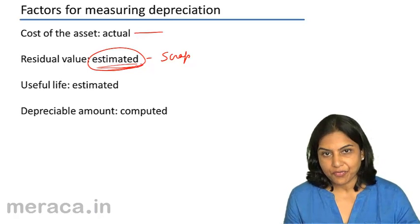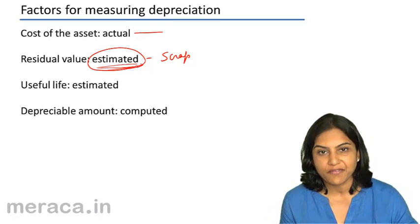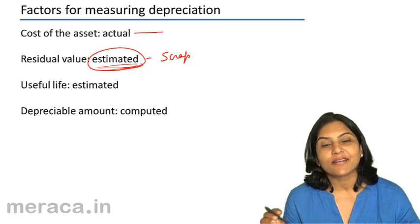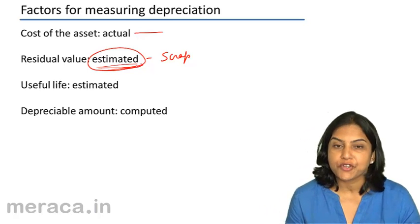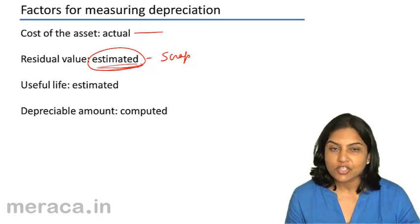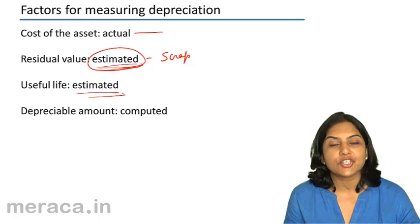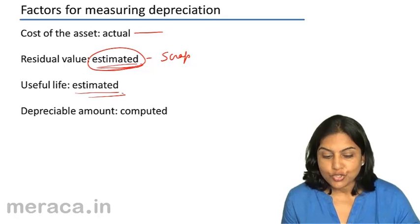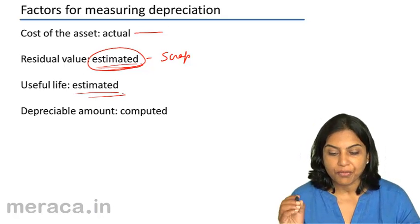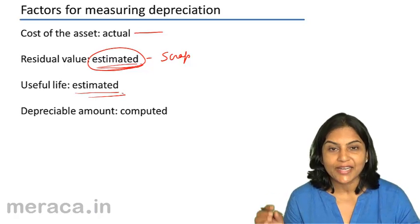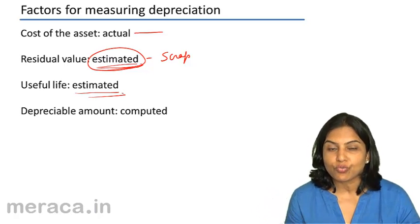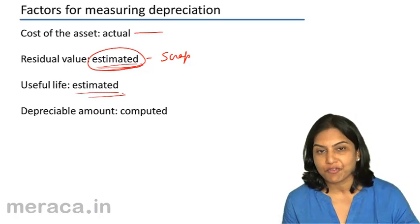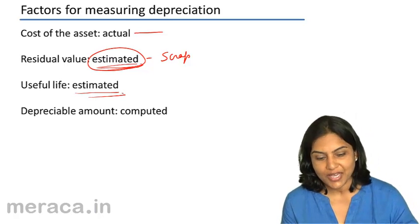Next is the useful life. I expect this machine to run for 5 years, but it is possible that it runs for only 4 and a half years, or quite possibly 7 years. So the useful life of the asset is also an estimate I make based on my experience, my judgment, and my understanding. These 3 factors — cost of the asset, expected scrap or residual value, and expected useful life — are required for measuring depreciation.